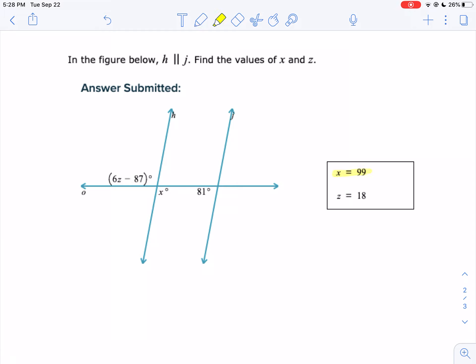How did you get 18 for an answer for Z? That's what I don't get. If we take a look at Z, or the angle that includes Z, 6Z minus 87, that's vertical with X.